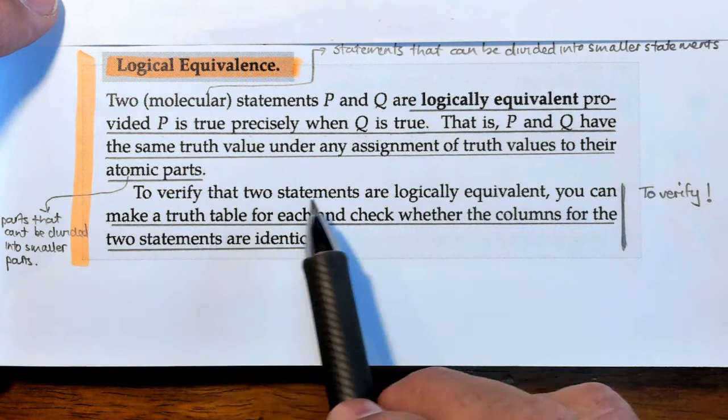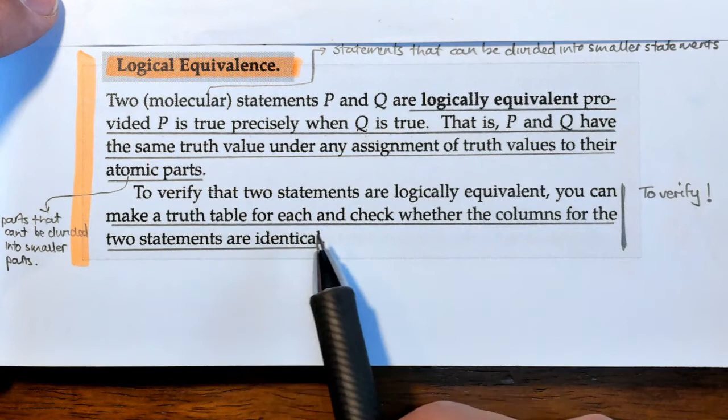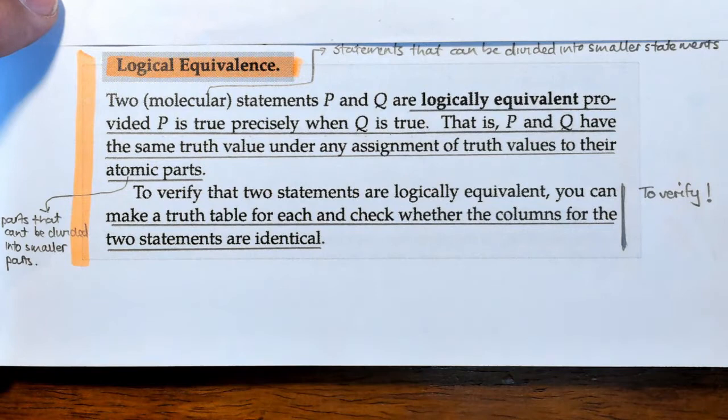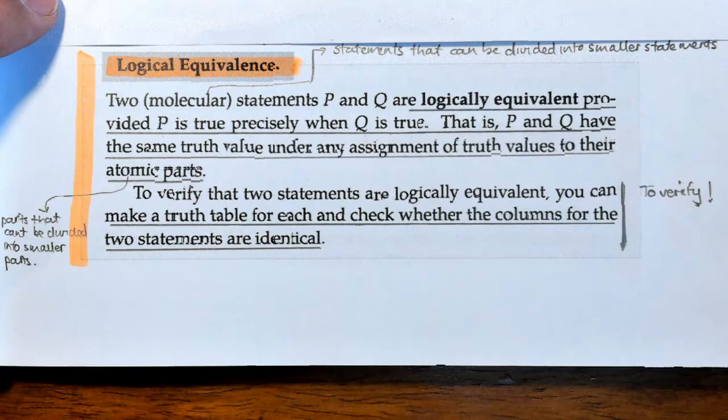Now here's the verification. To verify that two statements are logically equivalent, you can make a truth table for each and check whether the columns for the two statements are identical. So let's see how.